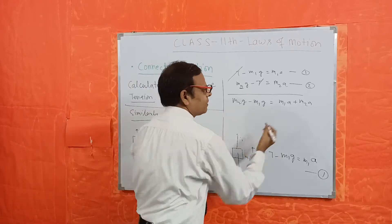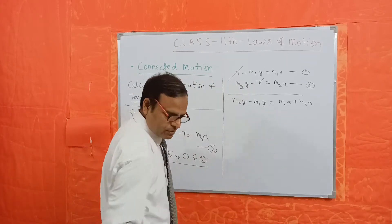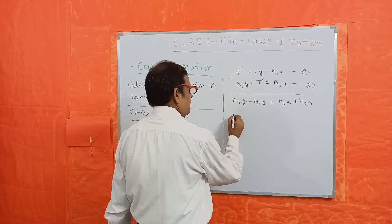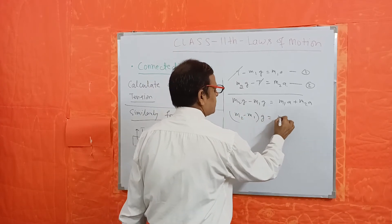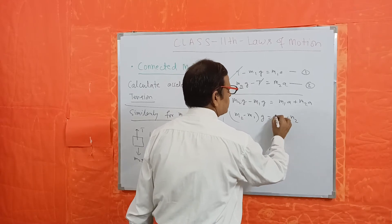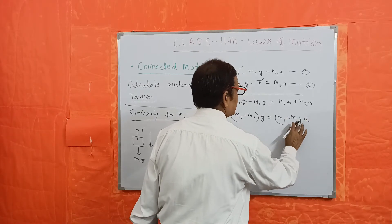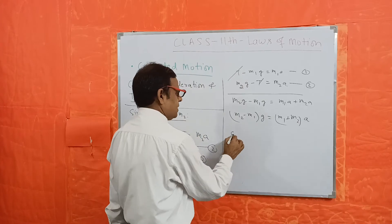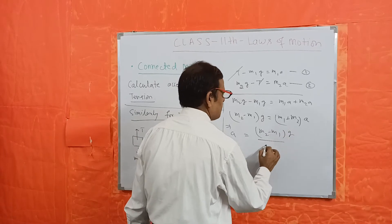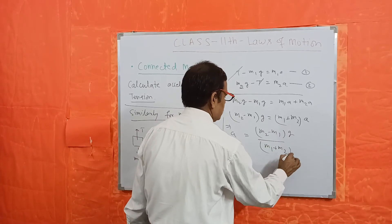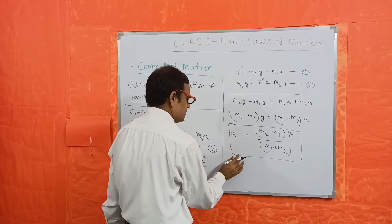So M2g minus M1g equals M1A plus M2A. Taking g common on the left and A common on the right, we get (M2 minus M1)g equals (M1 plus M2)A. Therefore, A equals (M2 minus M1)g divided by (M1 plus M2). This is the expression for acceleration.